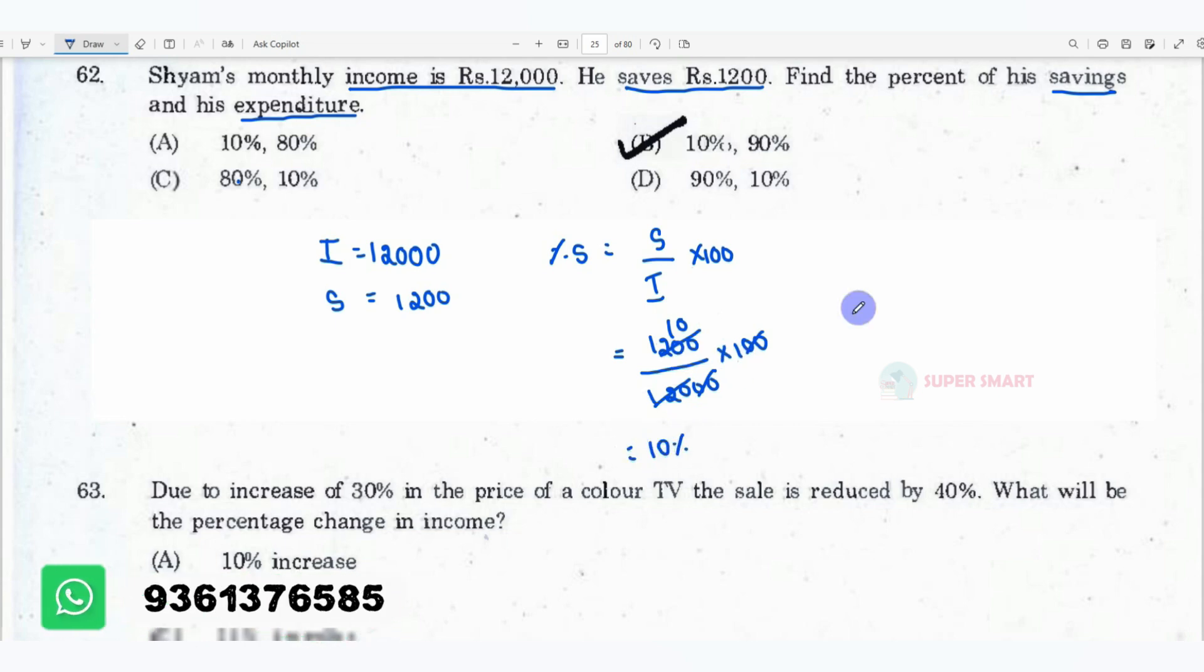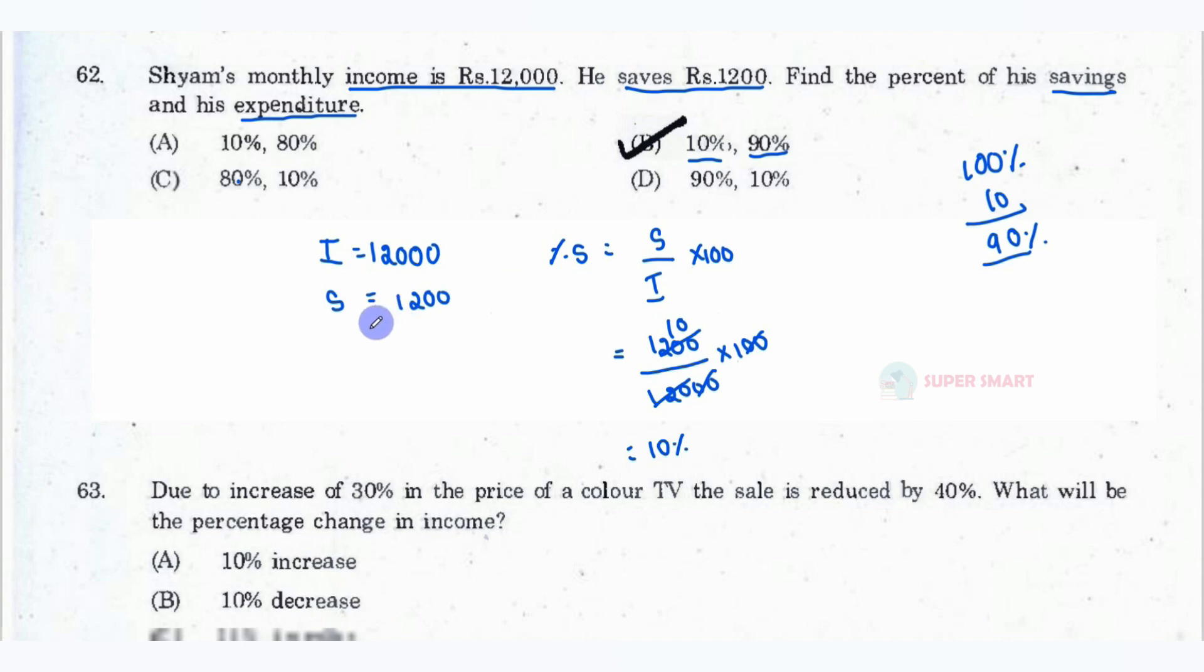If you save Rs 1,200, you will have expenditure of Rs 10,800. So expenditure percentage is expenditure divided by income into 100. So expenditure amount is Rs 10,800 divided by income Rs 12,000 into 100.